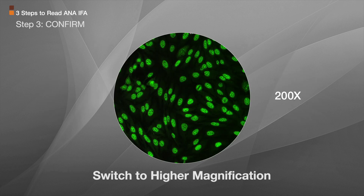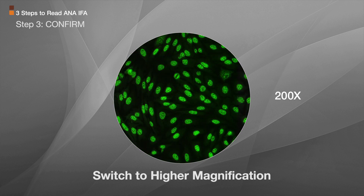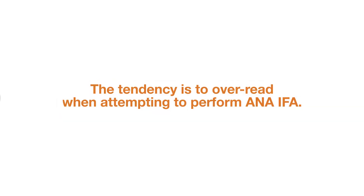Step 3: Switch to a higher magnification. A 400 times total magnification is recommended to confirm the pattern. Remember, you're looking at the staining pattern in the nucleus of your interphase or resting cell and the chromatin region of your metaphase or dividing cells. The tendency is to over-read when attempting to perform an ANA-IFA, so try to keep reading simple.